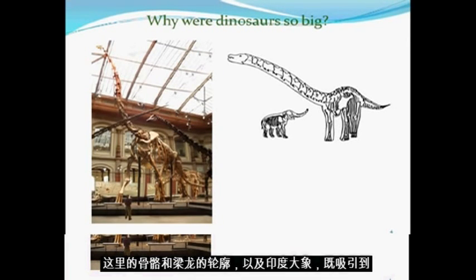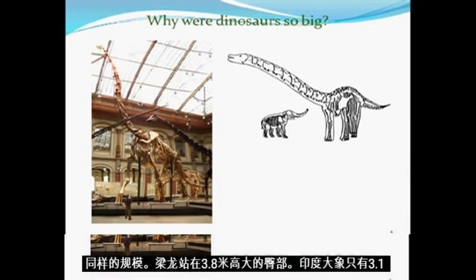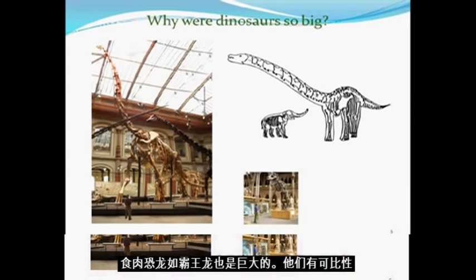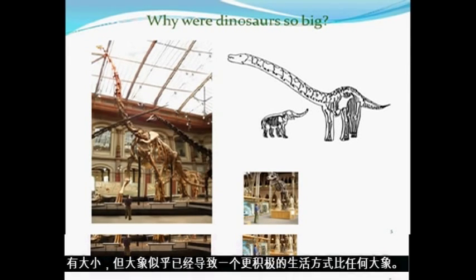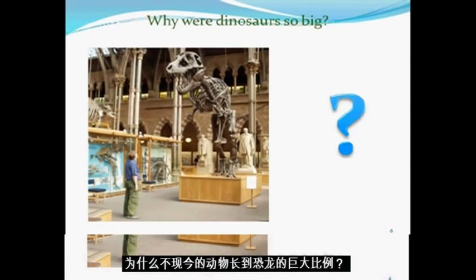Here is the skeleton and outline of Diplodocus and the Indian elephant, both drawn to the same scale. Diplodocus stood 3.8 meters tall at the hips; the Indian elephant is only 3.1 meters head height. Carnivorous dinosaurs, such as Tyrannosaurus rex, were also gigantic — comparable with elephants in size, but seemed to have led a much more active lifestyle than any elephant. The gigantic size of dinosaurs is obvious, but why were the dinosaurs so huge? Why don't present-day animals grow to the immense proportions of the dinosaurs?